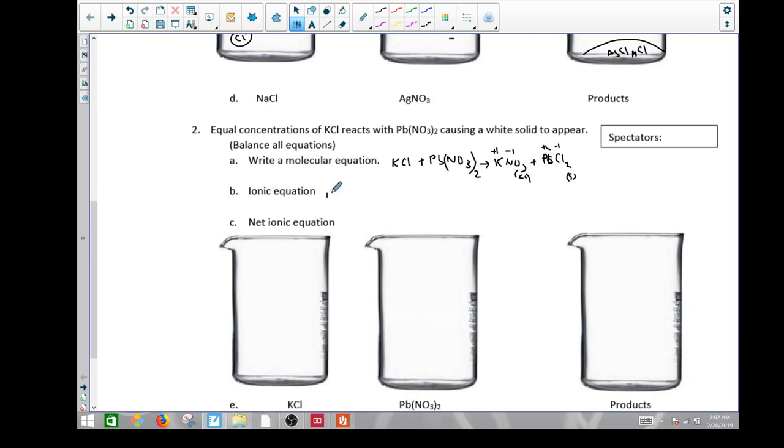So the ionic equation is K plus plus Cl minus plus Pb 2 plus plus NO3 minus yields PbCl2. This one's a solid, and then we have KNO3, and this one is aqueous. So now the ionic equation is almost never asked on test questions, but what it does is it exactly represents what's in the beaker.